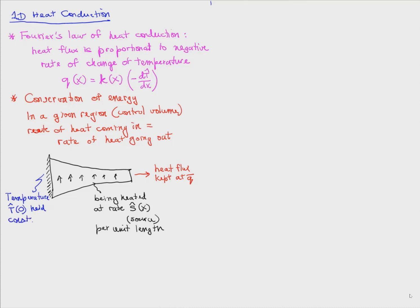The right end of this region is kept at a constant heat flux of Q̄, and the left end is held at a constant temperature T₀. If we cut out a piece between positions x₁ and x₂ and write conservation of energy, we have heat flux Q(x₁) coming in from the left, Q(x₂) going out from the right, and the heat source Ŝ(x).